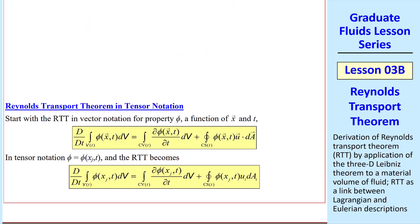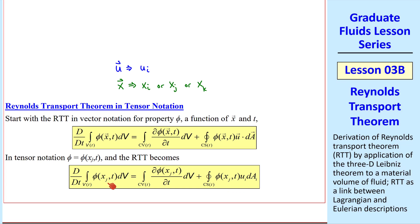Finally, we write the Reynolds Transport Theorem in tensor notation. In tensor notation, velocity vector is written as ui, and position vector x is written as xj. So phi is a function of xj and time. The Reynolds Transport Theorem becomes the equation shown here. The dot product u dot dA is ui dAi. I chose j for x so we wouldn't have i repeated three times. There's a free index j in this equation, but that doesn't mean this is a vector equation — it can be a vector, scalar, or a tensor. We're just saying that phi itself is a function of xj and t, and phi can be any property we want, expressed as capital Phi per volume.